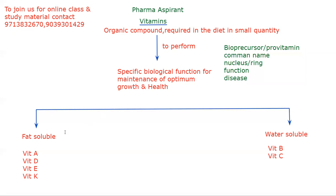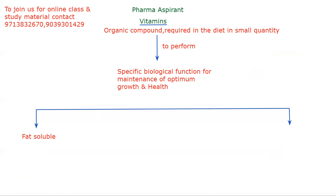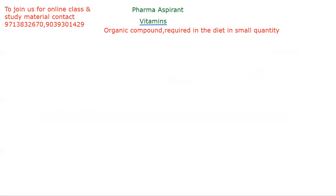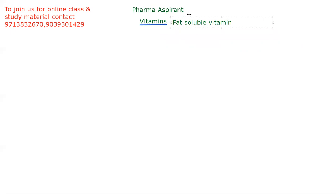We will start with the fat-soluble vitamins. Fat-soluble vitamins include Vitamin A, D, E, and K. So all the vitamins we will discuss now are fat-soluble vitamins. First, we are reading about Vitamin A.